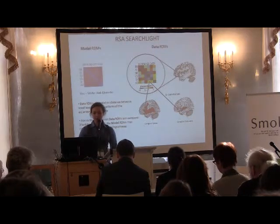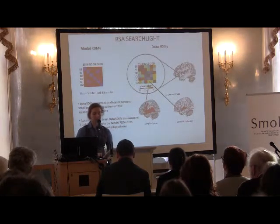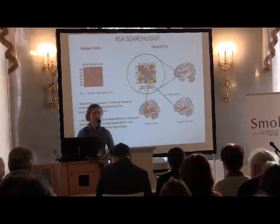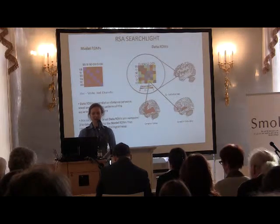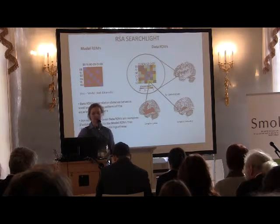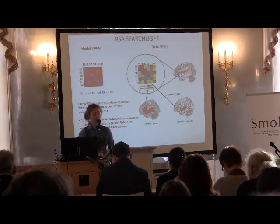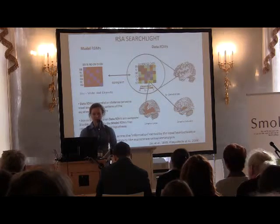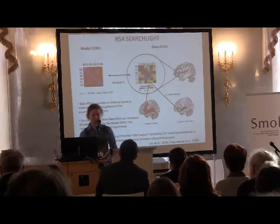The next step is to compare our data with our model. Our model is a representational similarity matrix that shows our hypothesis about how we think the conditions are similar or dissimilar based on their experimental properties. This is complementary to the univariate analysis but shows different information, and we have to keep in mind the assumptions of what it shows. The diagonal of the matrix is blue — all conditions are similar to themselves. The off-diagonal cells show how fine-grained, unsmoothed activation patterns differ between conditions.